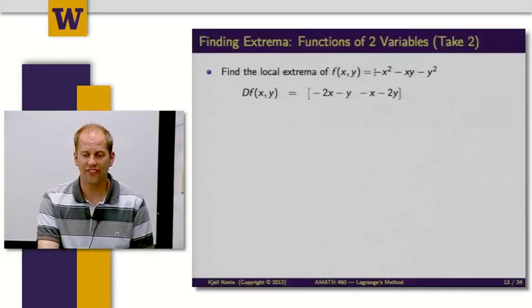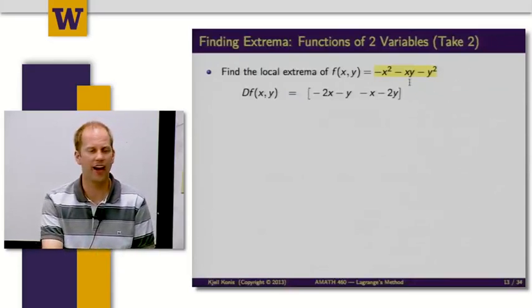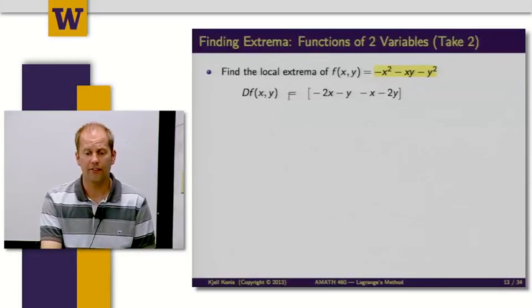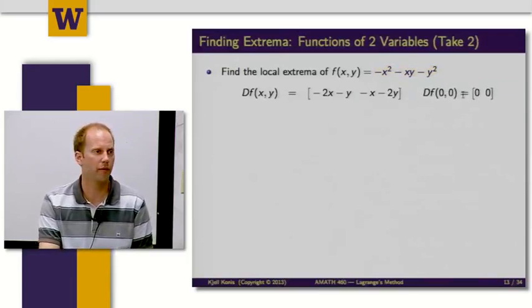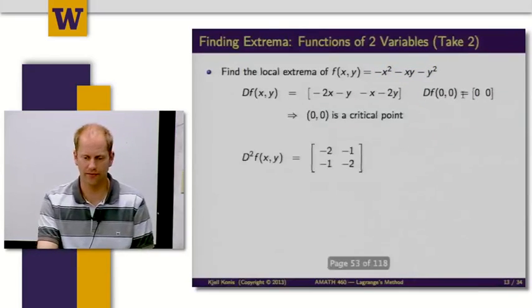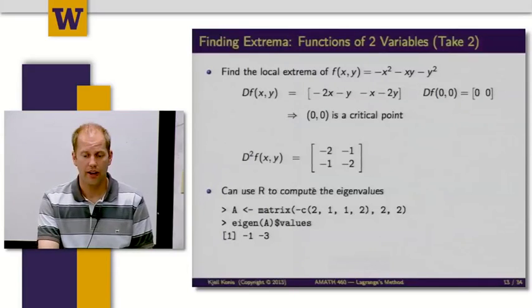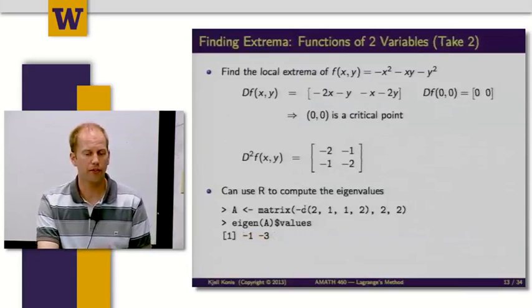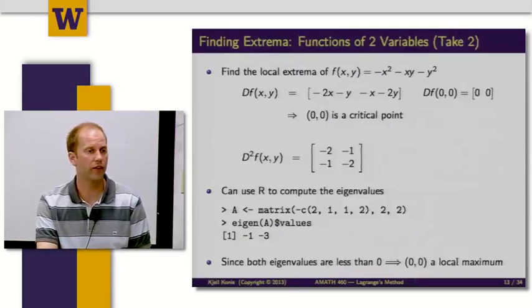If x² + xy + y² had a local minimum, if I just put a minus sign in front of each term, that's basically doing exactly the same problem but upside down. This really ought to have a local maximum. I'll compute the gradient. (0,0) is the critical point. When I compute the Hessian, I get the negative of the previous Hessian. Use R again to compute the eigenvalues. I get negative 1, negative 3. Both of these are strictly less than 0. So (0,0) now corresponds to a local maximum.